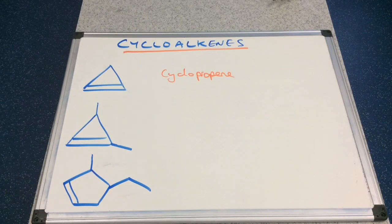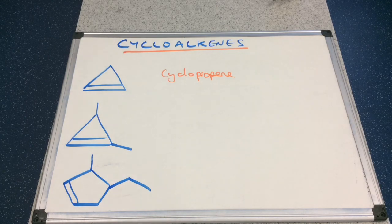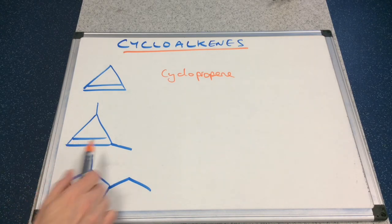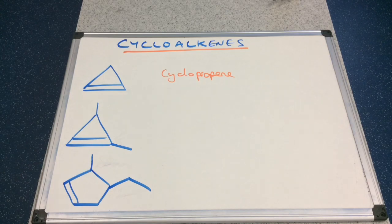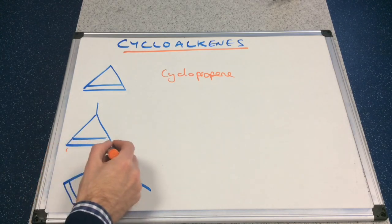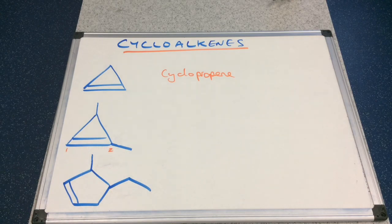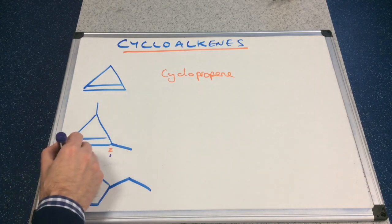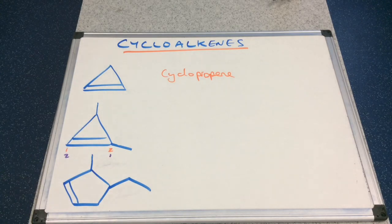Now for the middle one and this one as well, there's a new rule I need to introduce. It's to do with the double bond and how you number carbon one and two. The first thing to say is the double bond dictates carbons one and two. So basically it's either one, two going one way, or one, two going the other way. The carbon-carbon double bond is always carbons one and two.